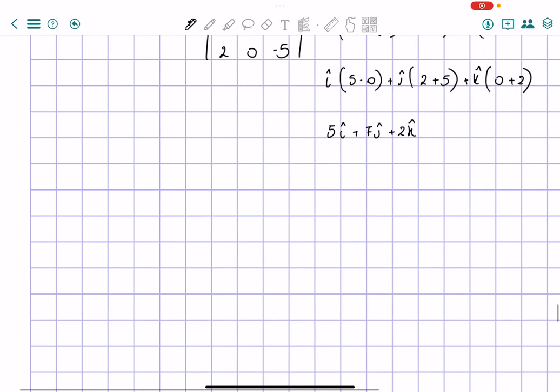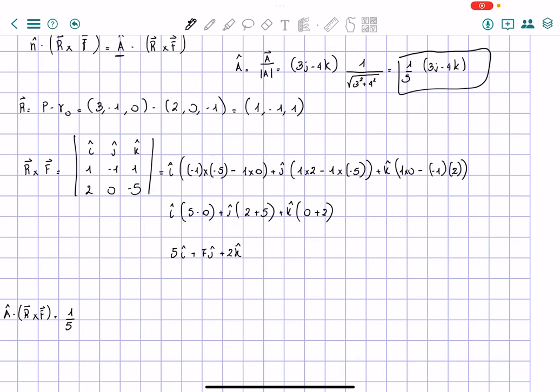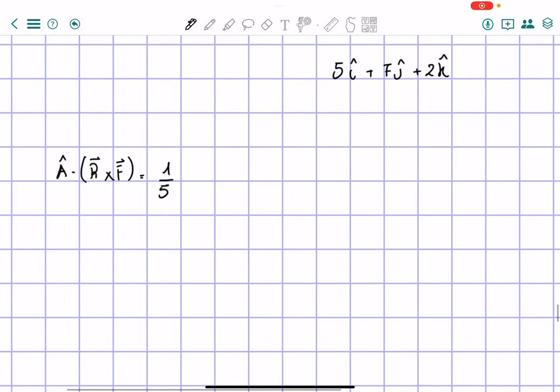Now we're not done, because then we need to multiply by a hat, so we're going to have a hat dot product with the cross product of r and f. So here we're going to have 1 over 5, the a vector was this part over here. So we're going to have 1 over 5 times 3j minus 4k, so 3j minus 4k,